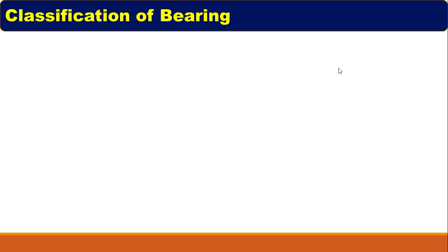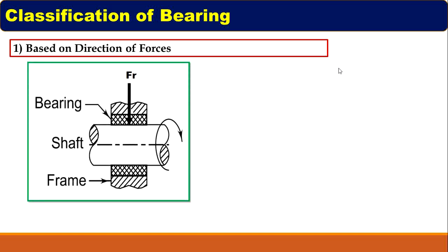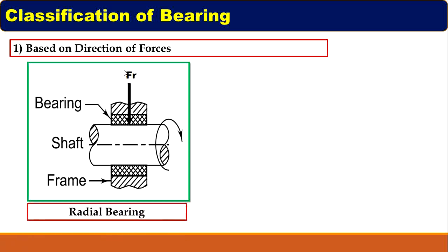Next, classification of bearing. The first classification is based on the direction of forces. The first figure shows the bearing, shaft and frame. In this figure, the bearing is subjected to only radial force. There is no thrust or axial force, so this bearing is called a radial bearing.